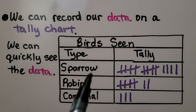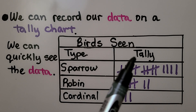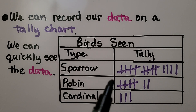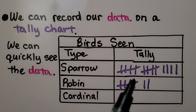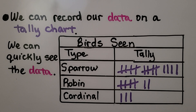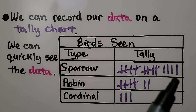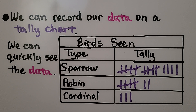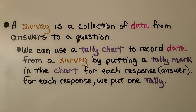Here's a tally chart of birds that were seen. The types are sparrow, robin, and cardinal. We can quickly see the data — whoever made this tally chart saw more sparrows than robins, and more robins than cardinals. Cardinals were seen the fewest times. We can count: 5, 10, 11, 12, 13, 14 sparrows; 5, 6, 7 robins; and 3 cardinals. There is one tally mark for each bird seen.